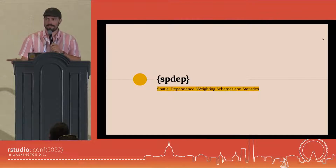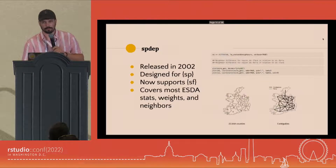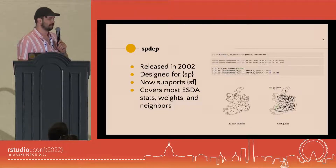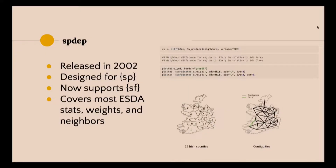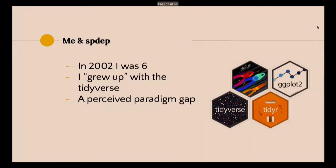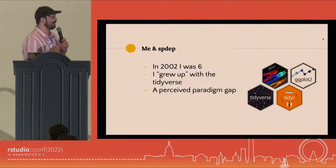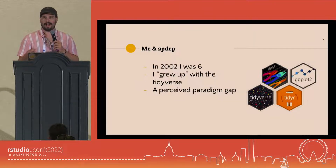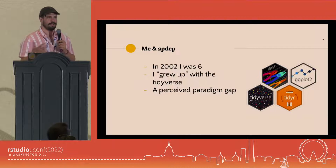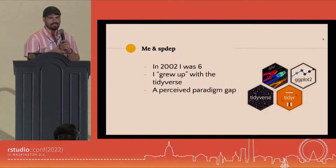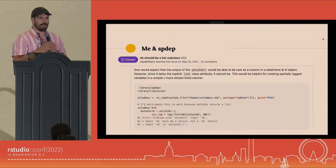spdep is a package for spatial dependence, weighting, and statistics. It was first released in 2002, initially designed for sp objects — the first way to interact with spatial data in R. It covers most of the spatial econometrics: statistics, weights, neighbors, and things like that. But in 2002 I was six, and I essentially grew up with the tidyverse. So when I use spdep, I have a perceived paradigm gap — the way spdep functions is different than the way I think about R.